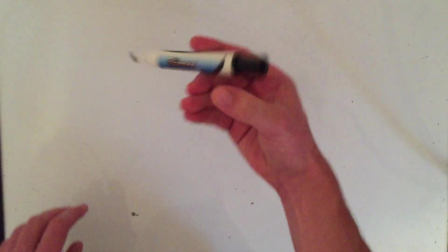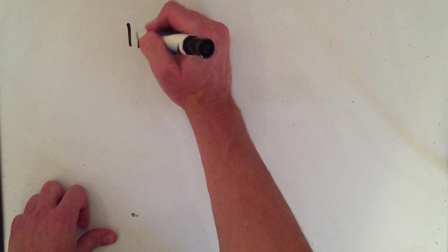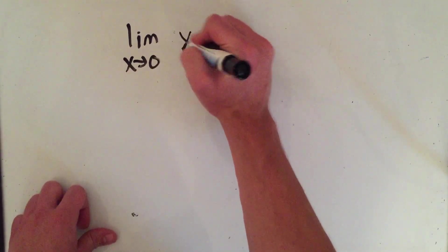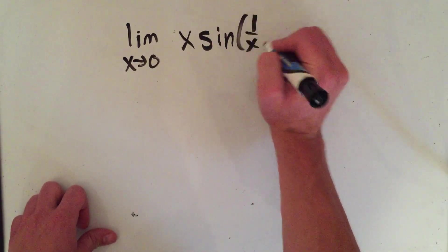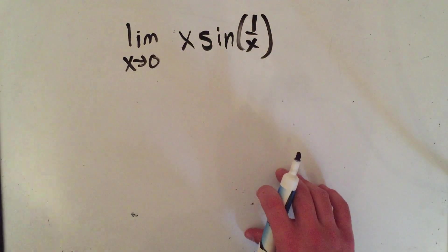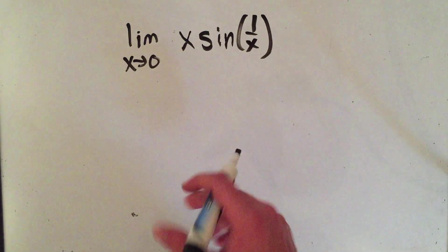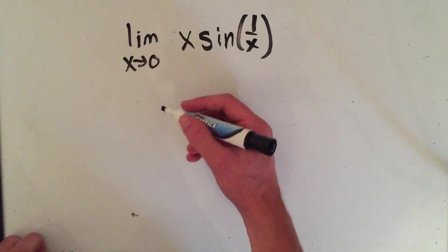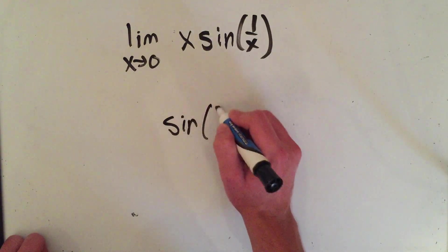So let's say you wanted to find the limit as x approaches 0 of x sine of 1 over x. That's not easy to do by itself, but let's start out with sine of 1 over x.